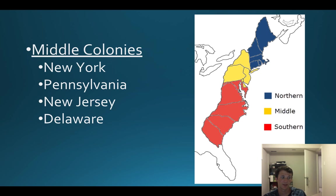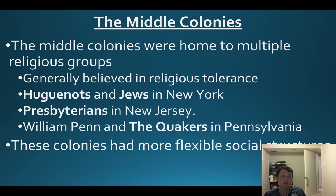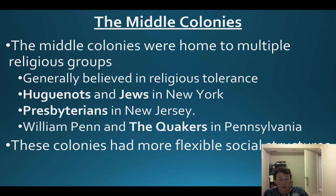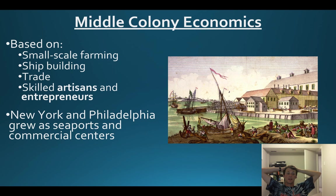Moving on to the middle colonies - New York, Pennsylvania, New Jersey, and Delaware. Know where these colonies are. The middle colonies are different from the south and the north in quite different ways - a lot more mixing of peoples and different religions. You have the Huguenots, French Calvinists settling in New York, Jewish people in New York, Presbyterians in New Jersey, and William Penn and the Quakers in Pennsylvania. They're based off trade - artisans and entrepreneurs.